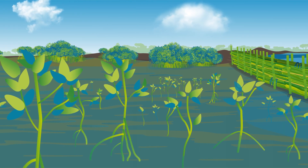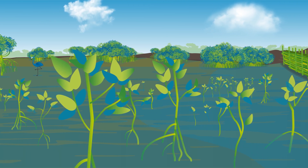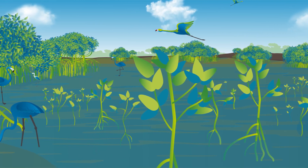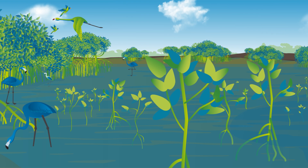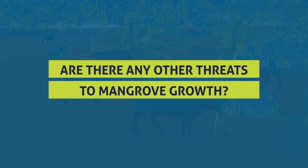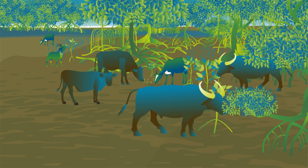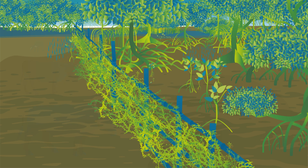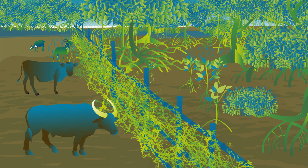Permeable structures in front of the coastline are an example of a measure to trap sediments. Such structures also create calm conditions with low wave energy and slow currents — in such conditions, seedlings can take root and grow well and sustainably. Finally, are there any other threats to mangrove growth? For example, too many grazers such as cows or goats can affect mangrove recruitment. Such threats can be quite easily prevented with appropriate measures.